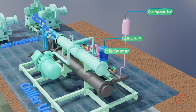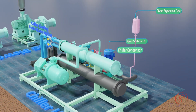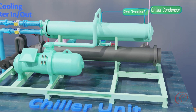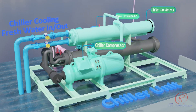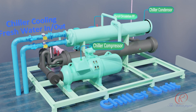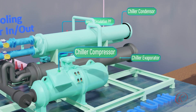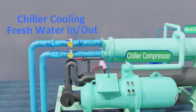Chiller condenser: to cool down and condense refrigerant gas into a high-pressure liquid. Chiller compressor: to circulate the refrigerant and increase its pressure and temperature, allowing the cycle to continue and enabling effective heat transfer. Chiller evaporator: to absorb heat from the space or substance that needs to be cooled; it is where the refrigerant evaporates or boils by absorbing thermal energy.